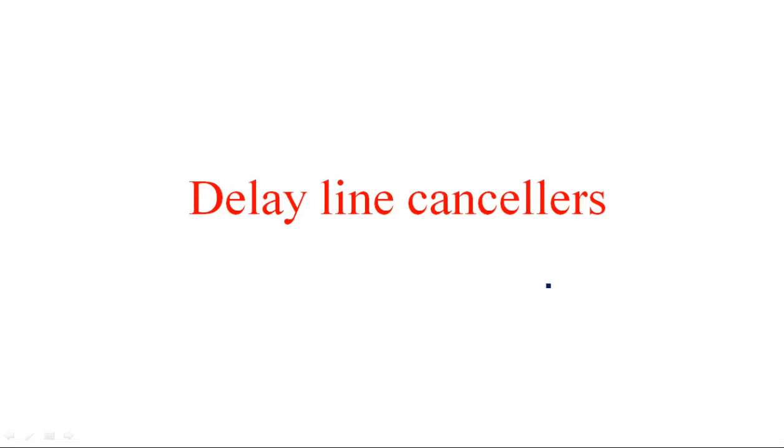In this video I am going to explain about delay line cancelers in the case of MTI and pulse Doppler radar. The output of the receiver is given to the delay line canceler. If you observe the block diagrams of MTI radar and pulse Doppler radar, the output is connected to a two delay line canceler from the receiver output.